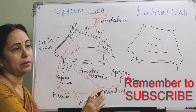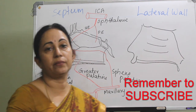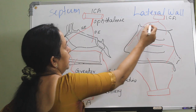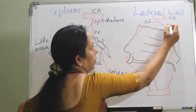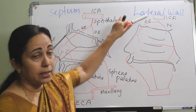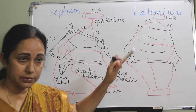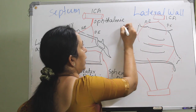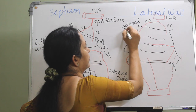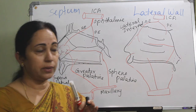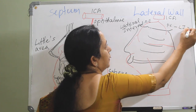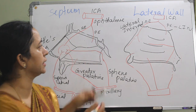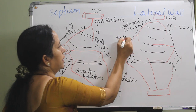In the lateral wall also, there is the same type of blood supply from the internal carotid system and from the external carotid system. Similar to the septum, from the internal carotid artery through the ophthalmic artery branches come as the anterior ethmoid and posterior ethmoid — and it is the lateral internal nasal branch, as it is supplying the lateral wall. So lateral internal nasal branches of anterior ethmoid and posterior ethmoid. And if there is a lateral internal nasal branch, there is also an external nasal branch — the external nasal branch of the anterior ethmoid artery.